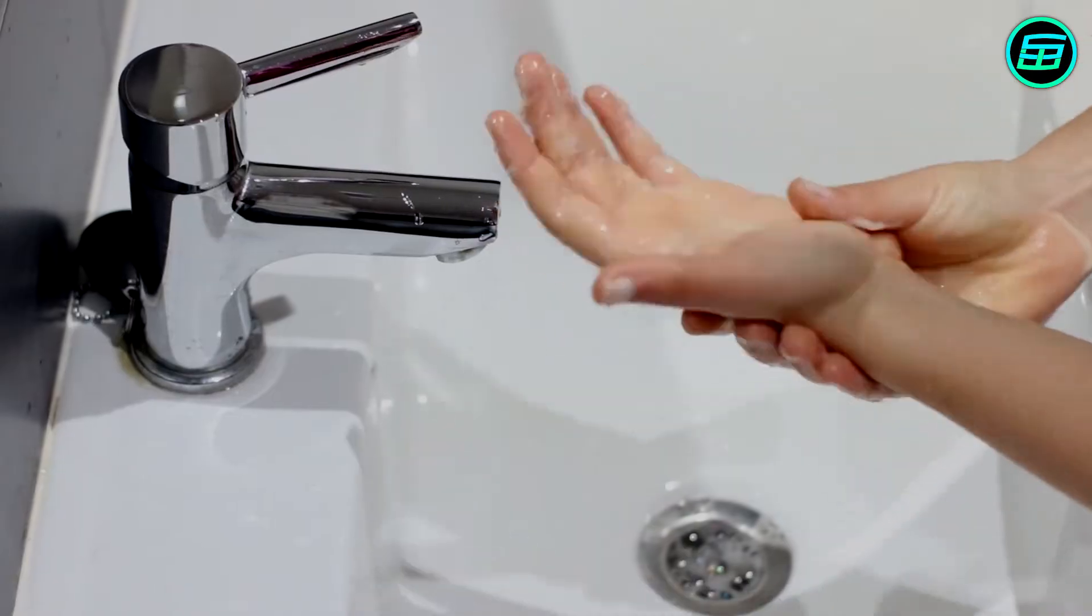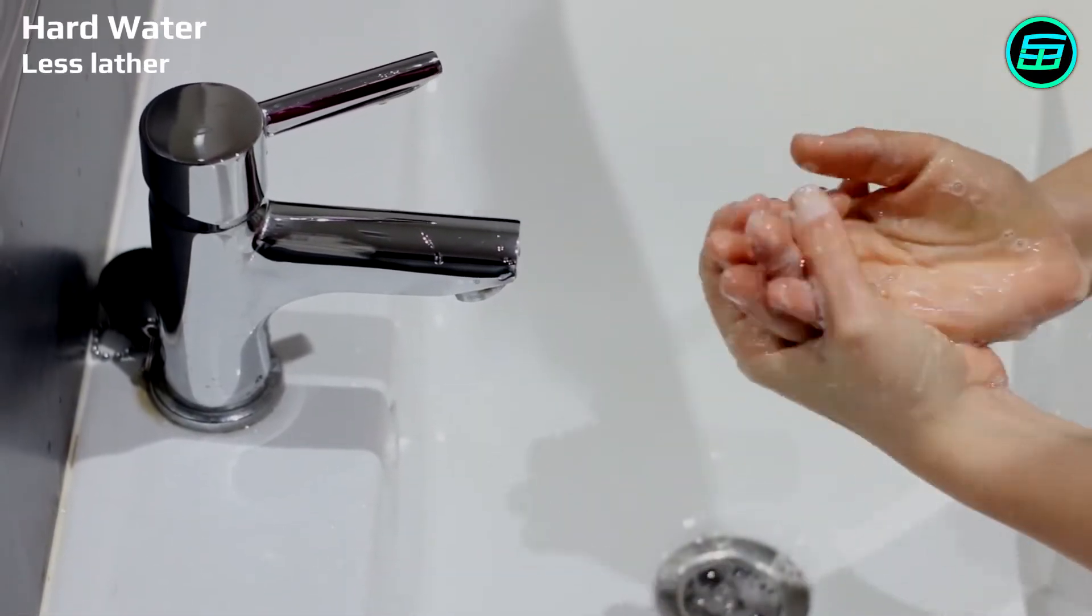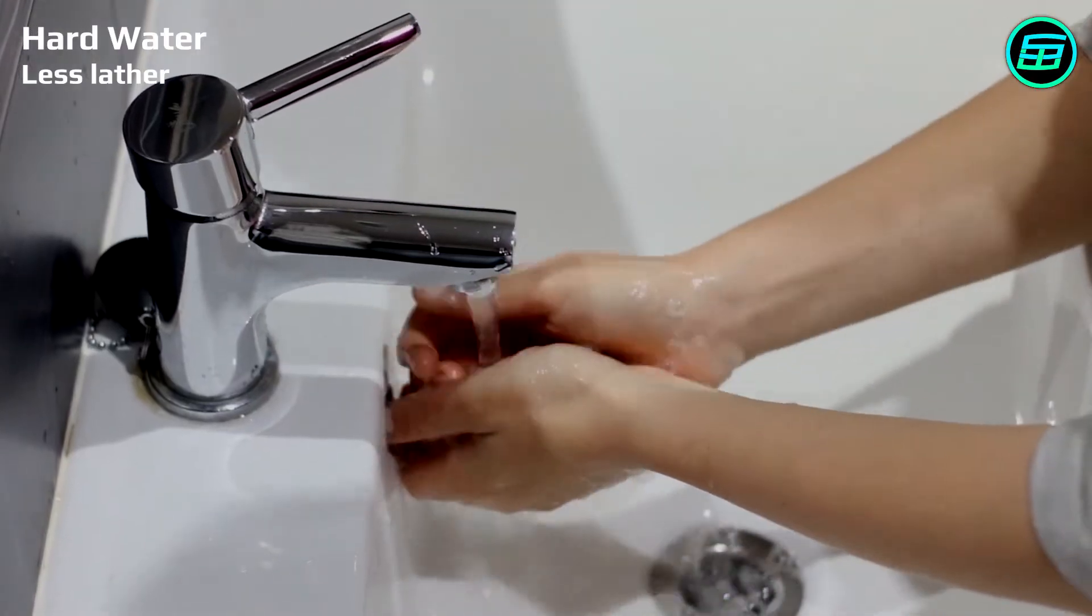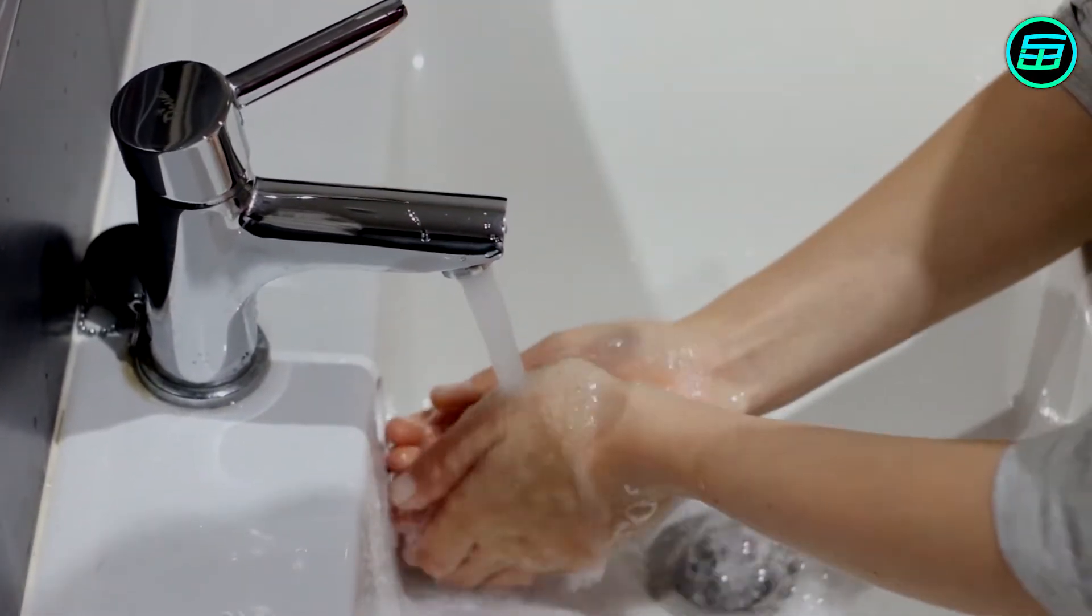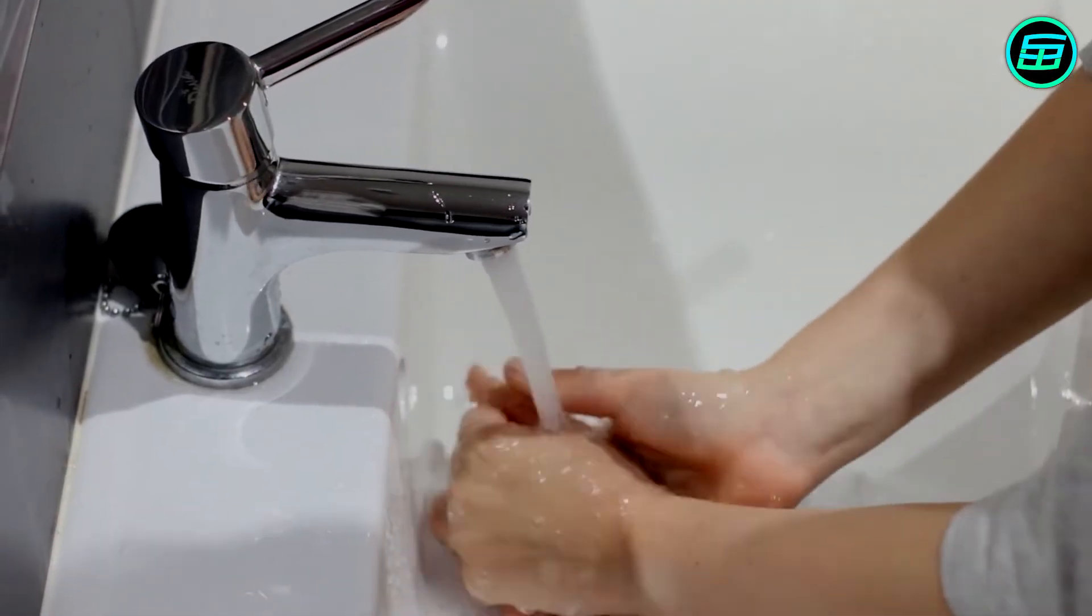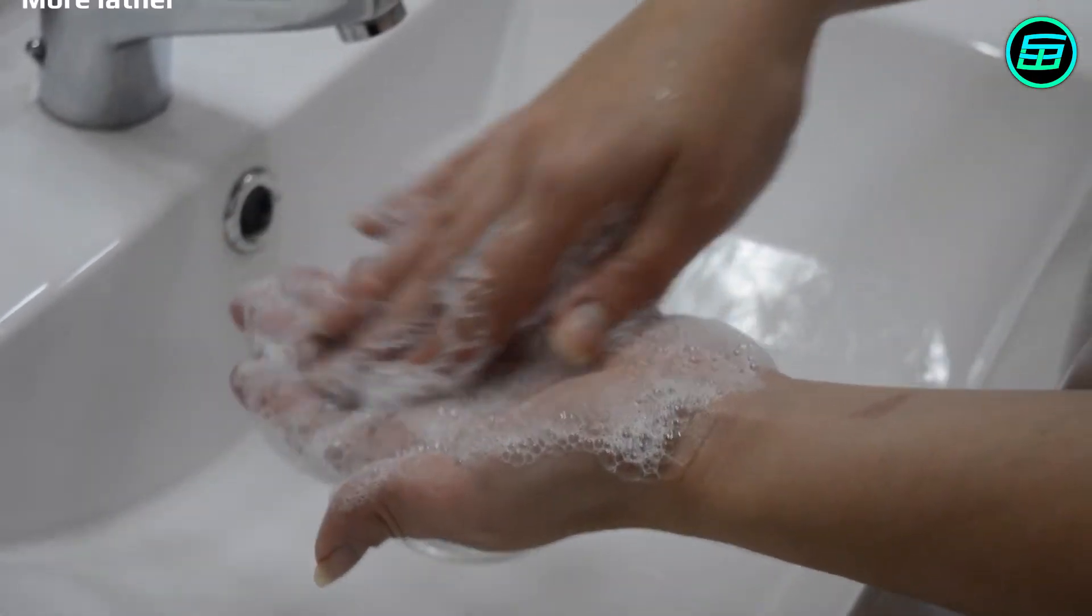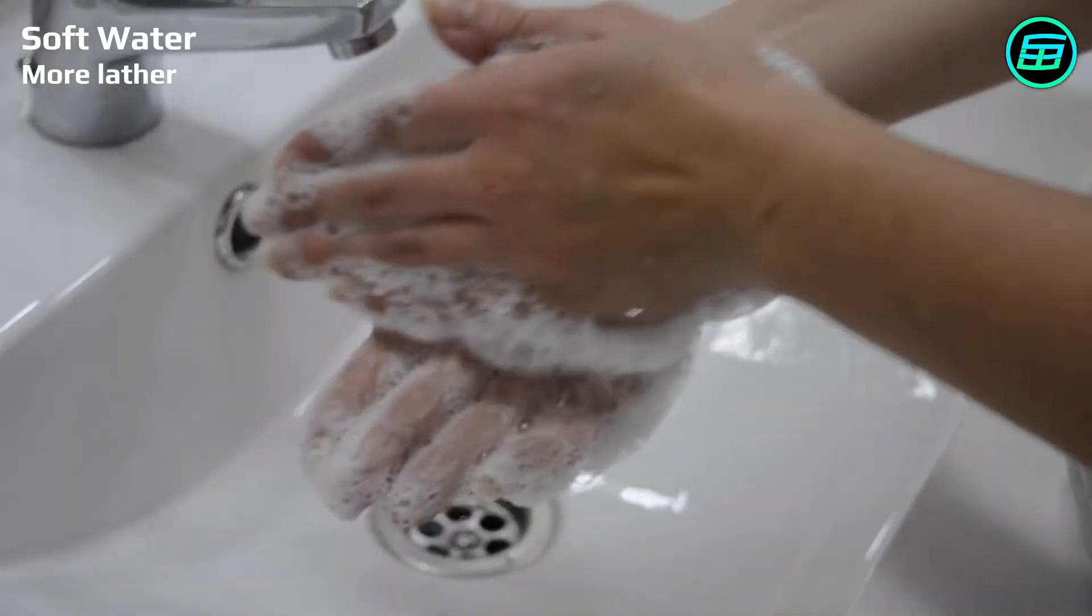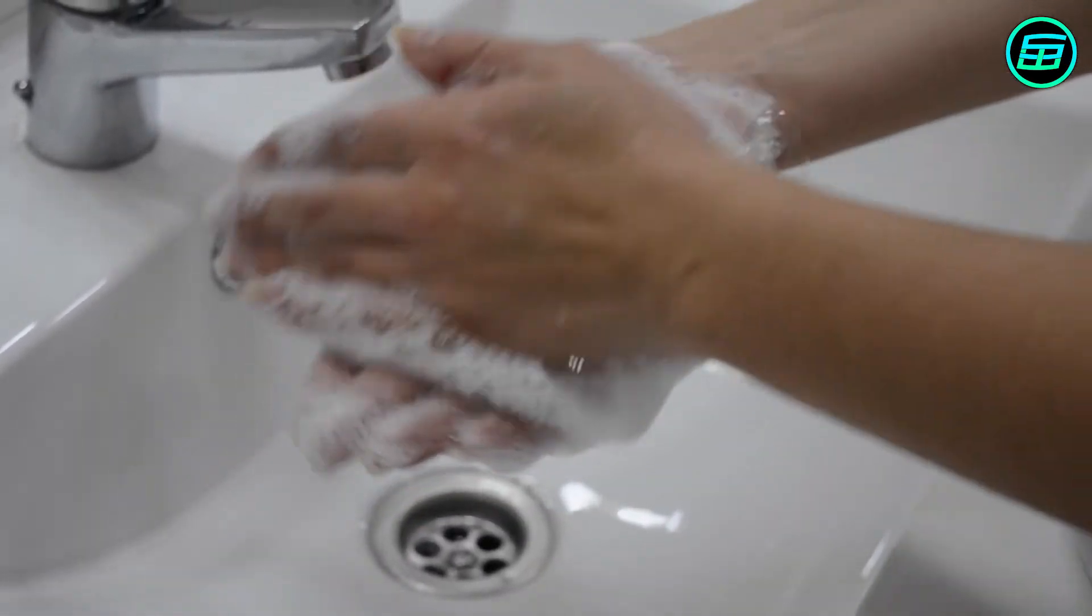Another way to tell if water is hard is if it doesn't form lather well. This failure to lather is due to the reaction between calcium and magnesium ions and soap molecules. The resulting molecules are insoluble in water and remain at the surface. Less soap molecules means less lather.